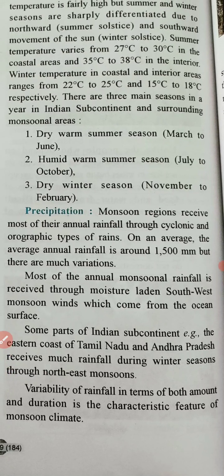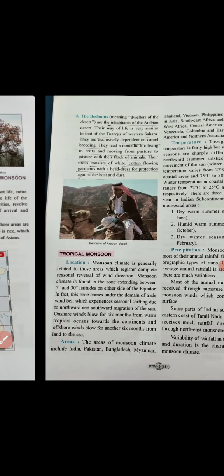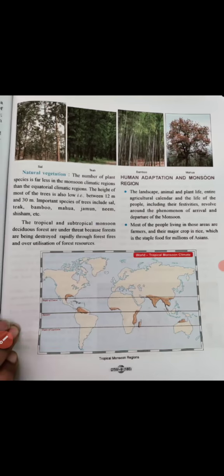Some parts of the Indian subcontinent, like the eastern coast of Tamil Nadu and Andhra Pradesh, receive much rainfall during winter due to the complete reversal of monsoon wind direction. They receive rainfall from the retreating monsoon winds. Variability of rainfall in terms of amount and duration is a characteristic feature of monsoon climate, as the monsoon pattern is not fixed.